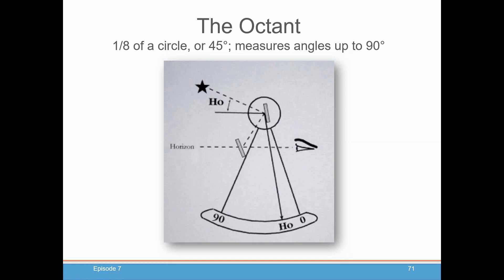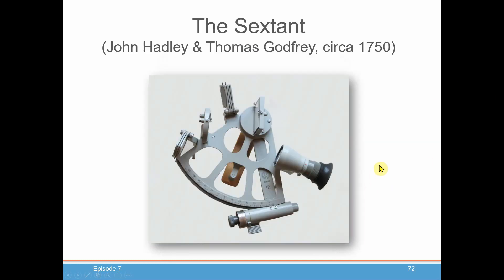And then the octant was invented, which allows you to measure angles up to 90 degrees, which for many applications is sufficient. It makes use of a principle, which is also used in the next evolution of an angle measurer, the sextant.